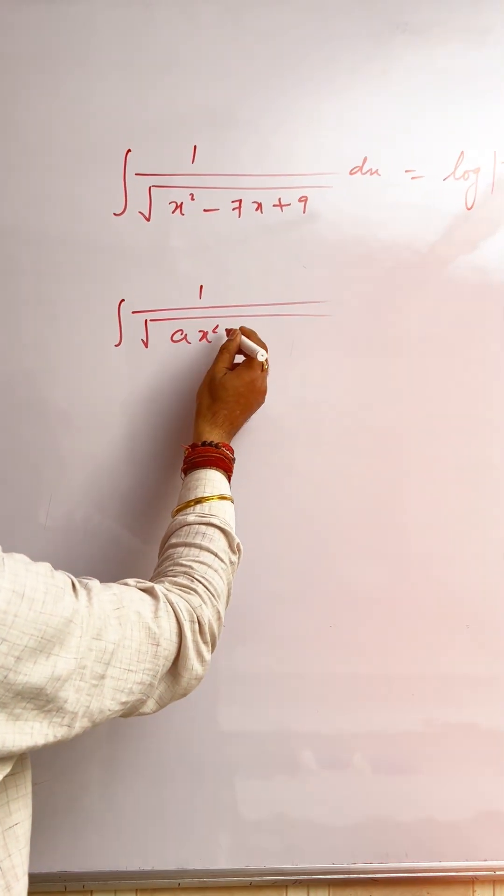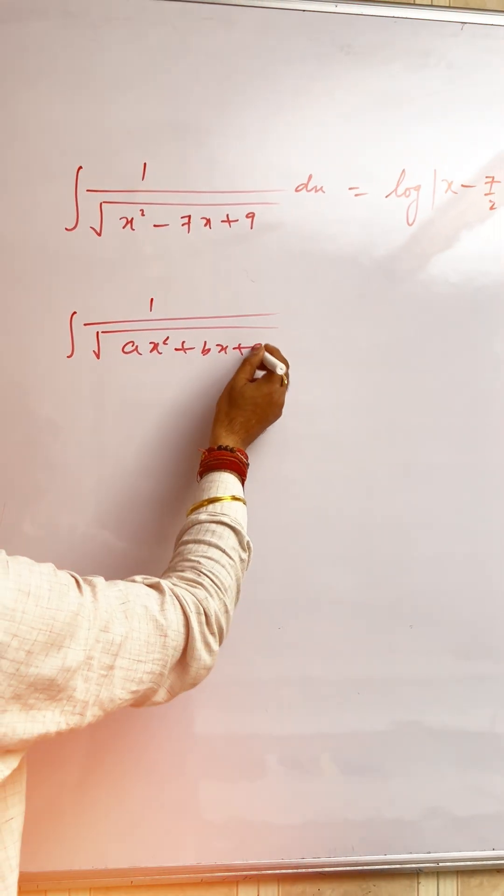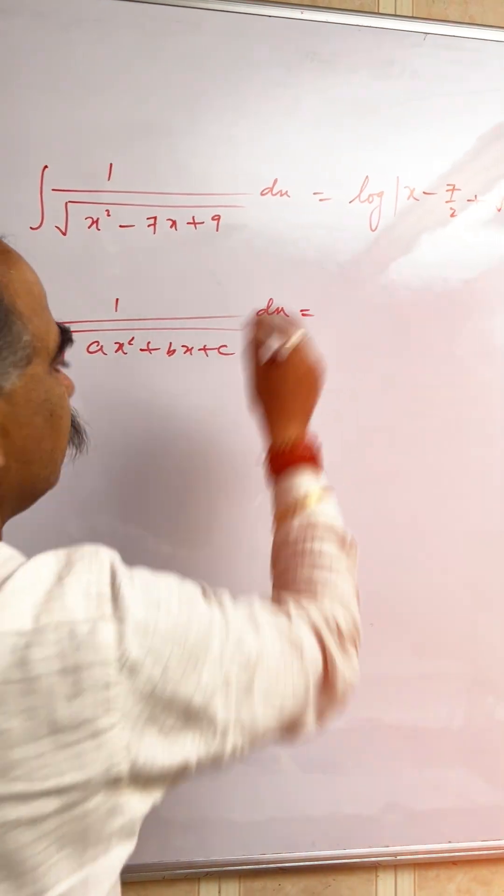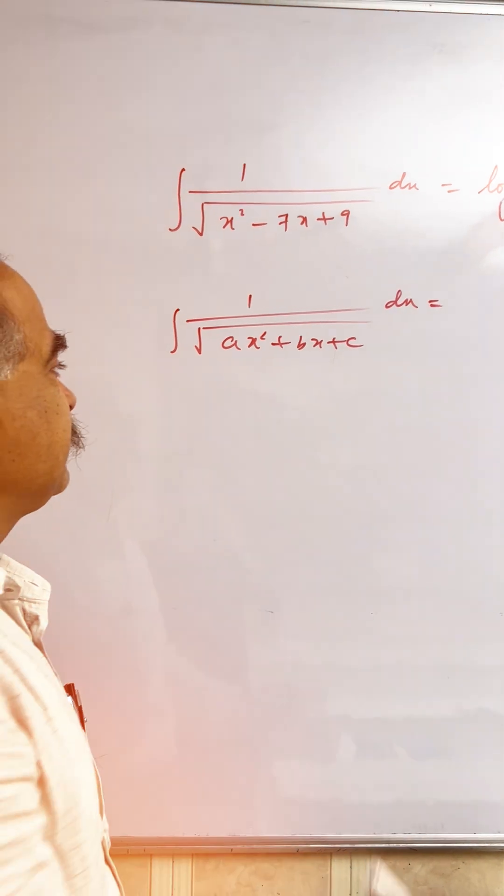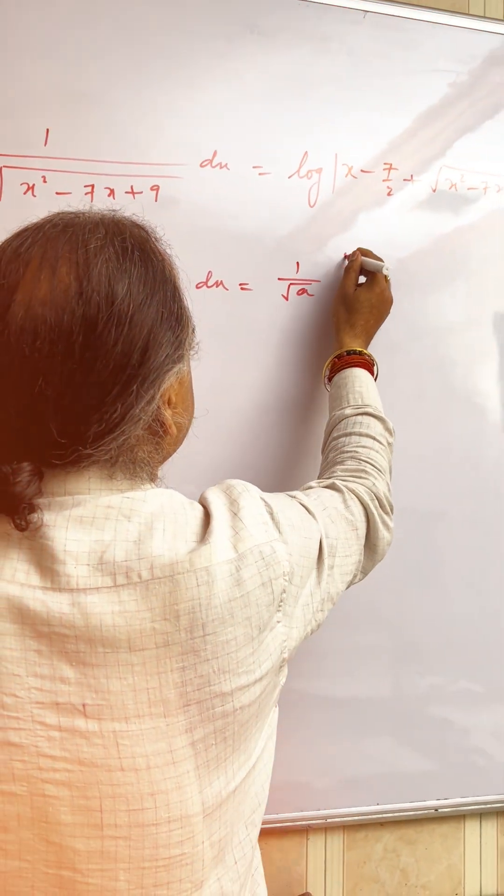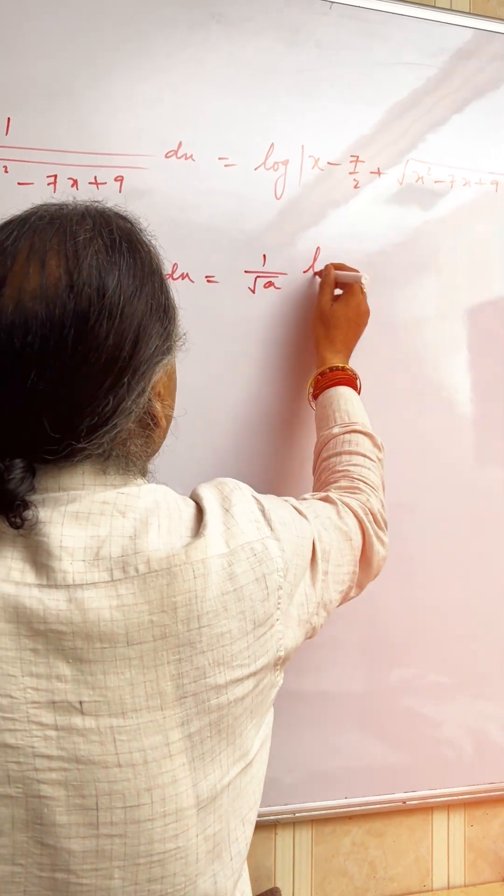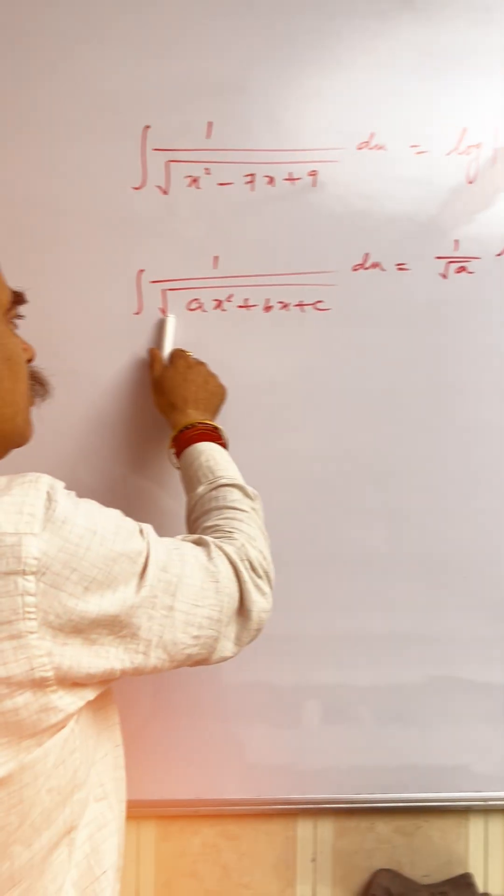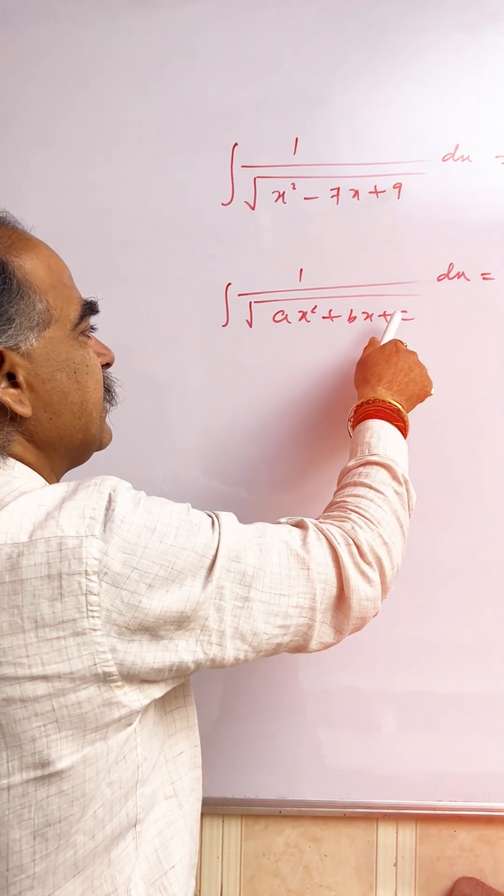In this case, take the coefficient of x square out to 1 by root a. After taking the coefficient of x square out, you will get root of x square plus b by a x plus c by a.